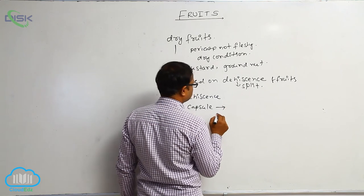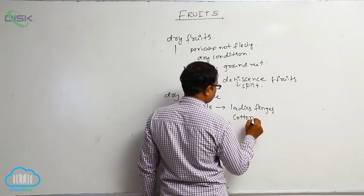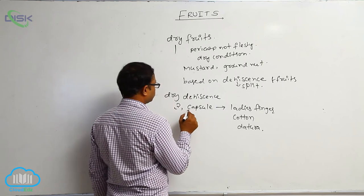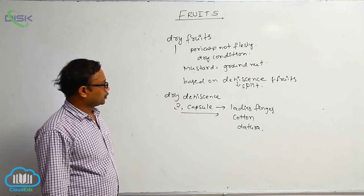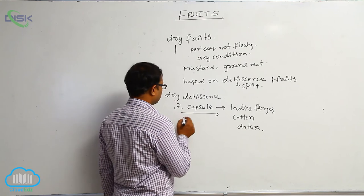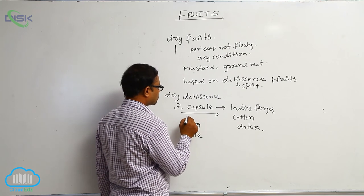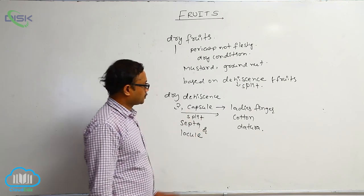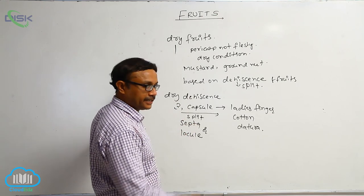Capsule examples: lady's finger, cotton, and dhatura. Capsule means the fruit is formed from a superior ovary in unilocular or multilocular condition. At the time of mature condition, the dry fruit is dehiscent at the septa or locule. If the capsule splits at the septa or locule, it is known as a capsule. These are dry dehiscence fruits.